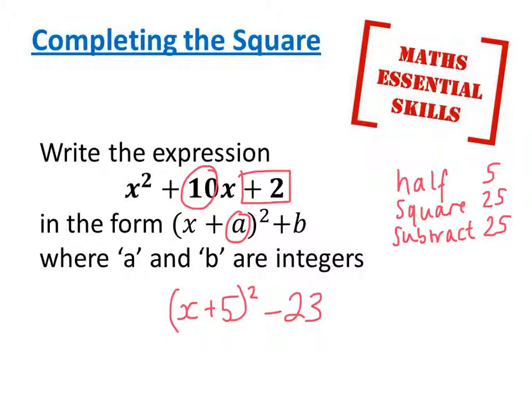The reason this works is because (x + 5)² is (x + 5)(x + 5). And this gives me x² + 10x + 25. However you'll see, what I was looking for earlier on in the question was x² + 10x + 2.